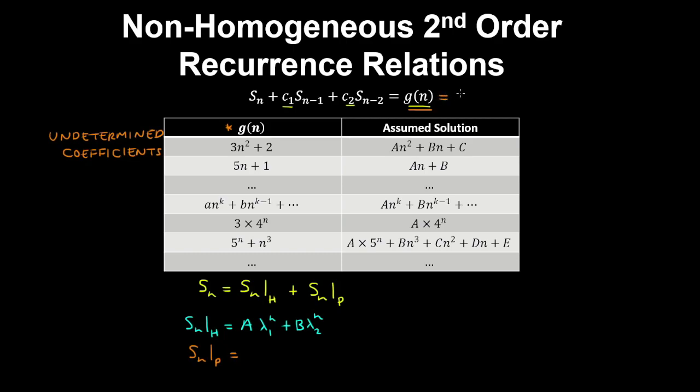So for example, if g of n was 2n plus 1, then g of n has the following form. And we can assume a solution of the form an plus b.